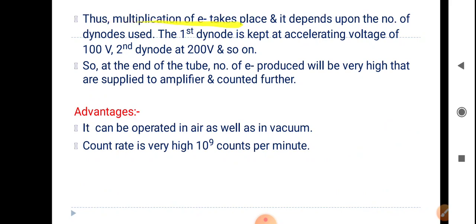Thus, multiplication of electrons takes place and it depends on the number of dynodes used. The first dynode is kept at accelerating voltage of 100 volts, second dynode at 200 volts, and so on. So at the end of the tube, the number of electrons produced will be very high, which are supplied to the amplifier and counted further.